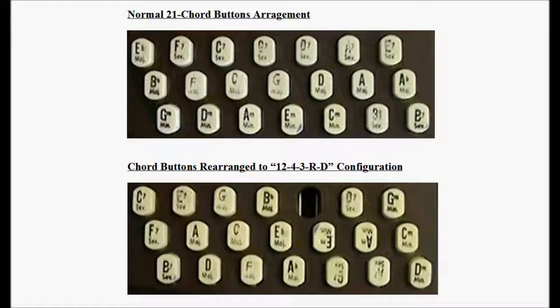On the standard 21-chord button autoharp, we won't have all the chord buttons for all the harmonies that are available in the 84-harmony all-keys autoharp chord bar configuration. For example, one wouldn't find the chord buttons for C sharp major, B flat minor, or the diminished thirds, augmented thirds, dominant sevenths, sixths, or minor sevenths for those keys on a standard set of buttons for a 21 chord bar autoharp.